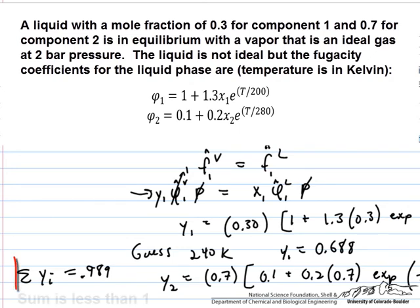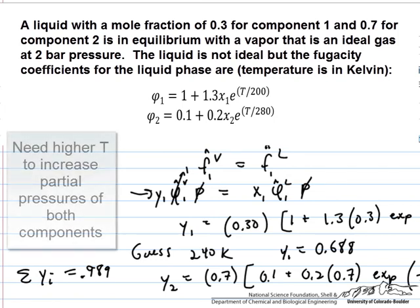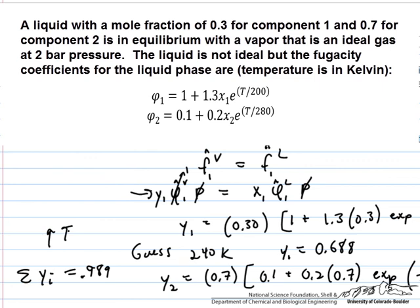The mole fractions sum to less than 1, indicating that the partial pressures are being estimated as lower than they actually are. This means we don't have a high enough temperature to make the components as volatile as they actually are. We should increase the temperature in our next guess to something above 240 Kelvin. We continue iterating until the sum of y's is acceptably close to 1.